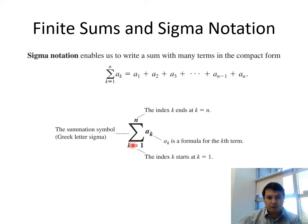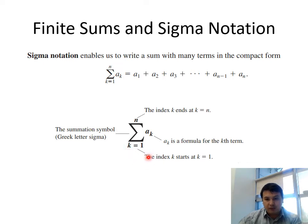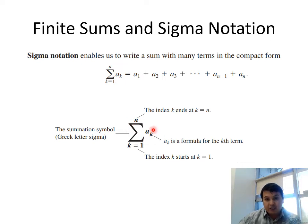It's called sigma because this is the sigma symbol from the Greek alphabet, and it stands for 's' — for sum. The index starts from k equals 1, but it may start from different values like k equals 0 or k equals negative 1. The top end is where the index ends, and a sub k is the k-th term, with k varying as the variable.